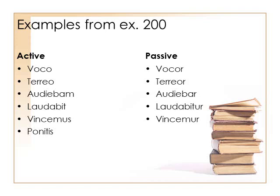PONITIS — so now we've changed person to second person, and here's where we're going to see some significant change. You place or you put becomes PONITIMINI. You are being placed. AUDIENT — this is a nice fourth conjugation verb — they are hearing. And we're going to change it by supplementing: AUDIUNTUR. They are being heard.